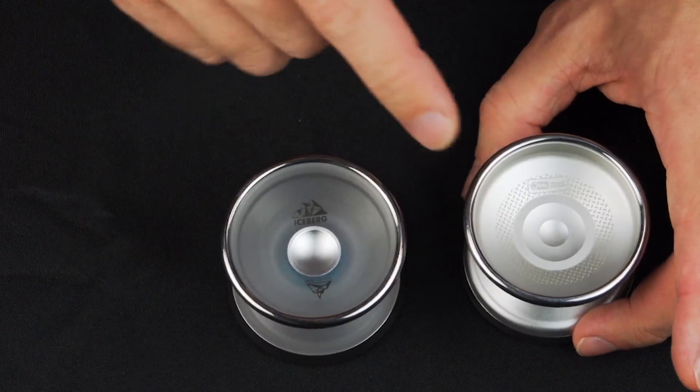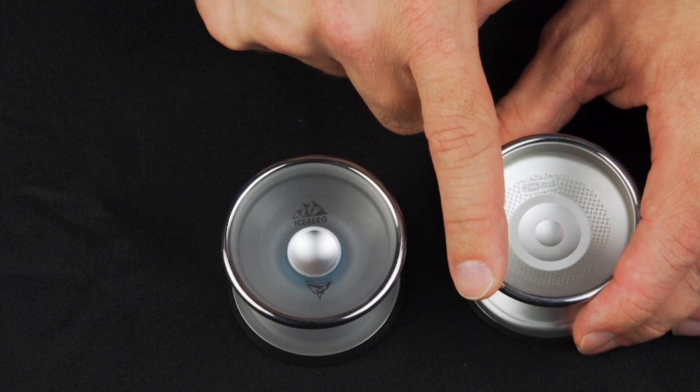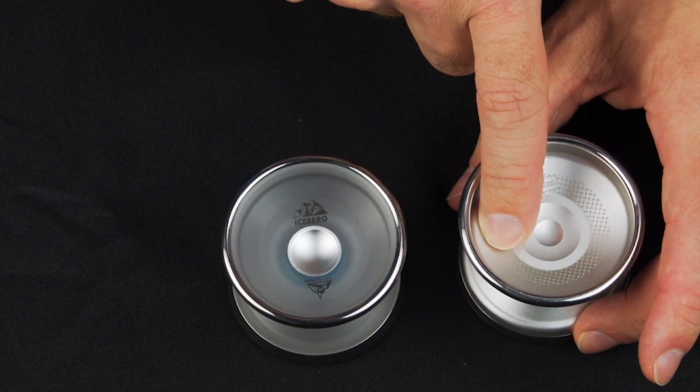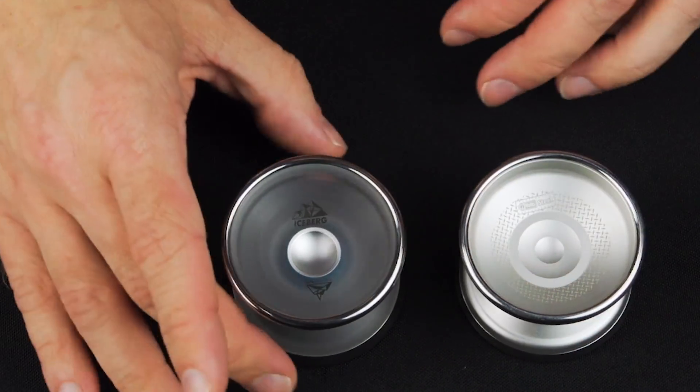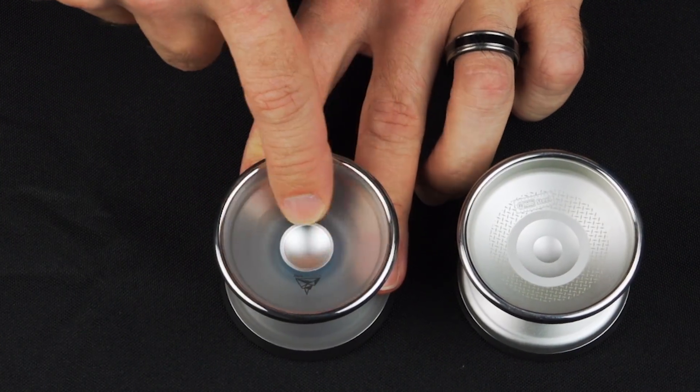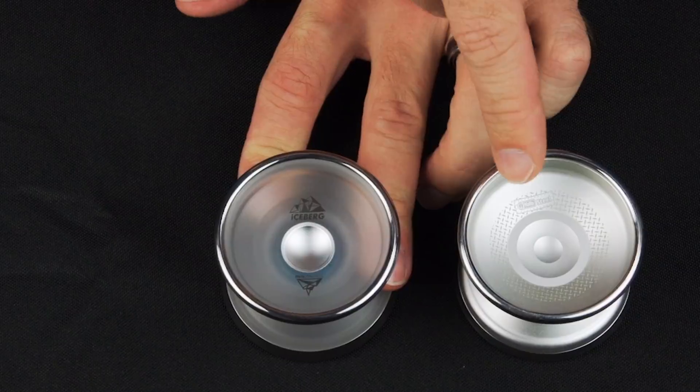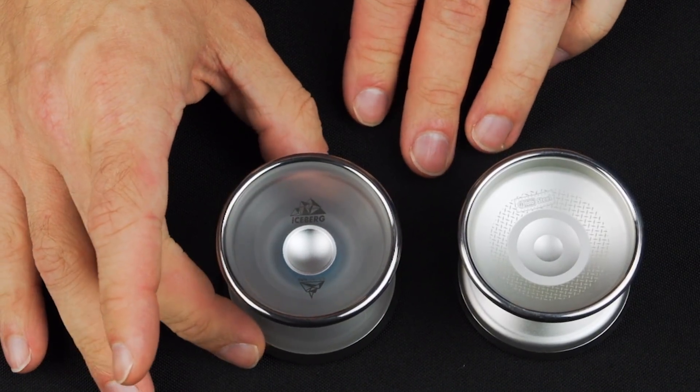On a standard aluminum stainless steel bimetal yoyo, the stainless steel is only three times heavier than the aluminum, so you can achieve a much greater differential with plastic than you could with aluminum, and that's really what makes this yoyo shine.